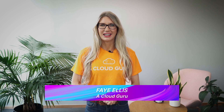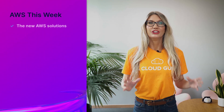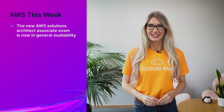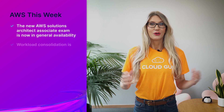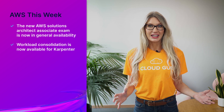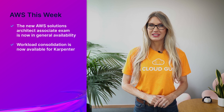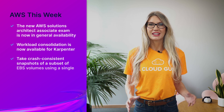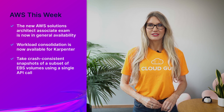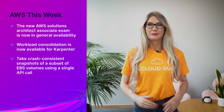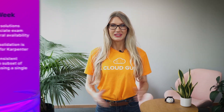Hello, Cloud Gurus, and welcome to AWS This Week. There are some very exciting announcements this week, including the new AWS Solutions Architect Associate exam is now in general availability. Workload consolidation is now available for Karpenter. And you can now take crash-consistent snapshots of a subset of EBS volumes using a single API call. You're watching AWS This Week with me, Faye Ellis.